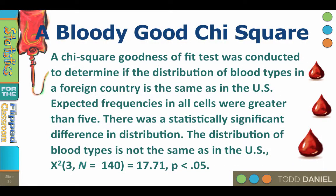Here is a sample APA write-up for our one-way chi-square goodness of fit test. A chi-square goodness of fit test was conducted to determine if the distribution of blood types in a foreign country is the same as in the United States. Expected frequencies in all cells were greater than five. There was a statistically significant difference in distribution. The distribution of blood types is not the same as in the U.S. Chi-square, three degrees of freedom, N of 140, equals 17.71, p less than 0.05.